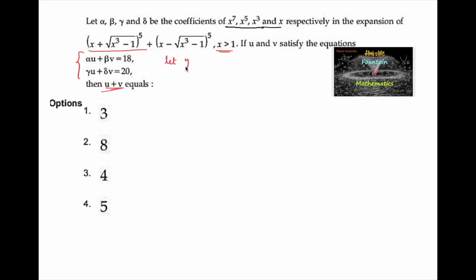Let us consider y = √(x³ - 1) for some time, so that the expression becomes (x + y)⁵ + (x - y)⁵.